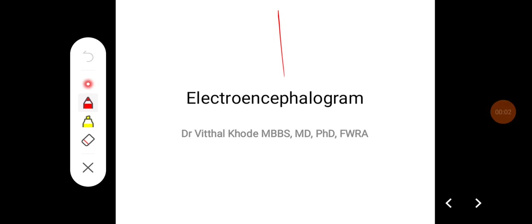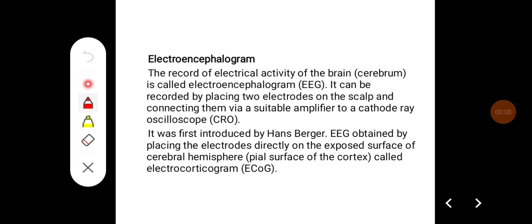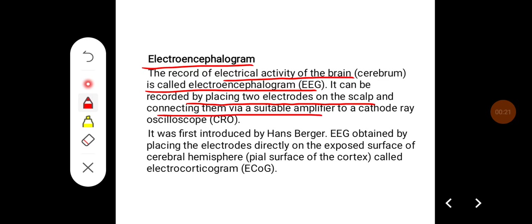In this class we will learn about electroencephalogram, that is EEG, and also about sleep. The record of electrical activity of the brain, that is cerebrum, is called electroencephalogram. It can be recorded by placing two electrodes on the scalp and connecting them via a suitable amplifier to a cathode ray oscilloscope. It was first introduced by Hans Berger.